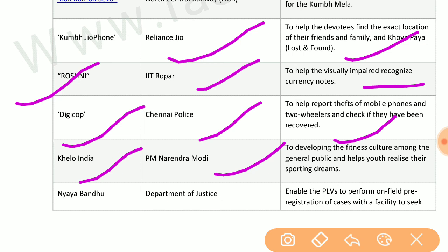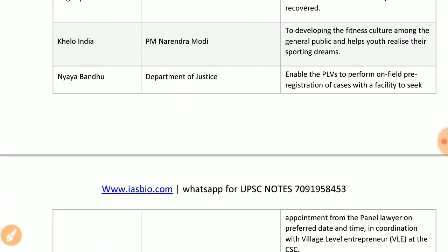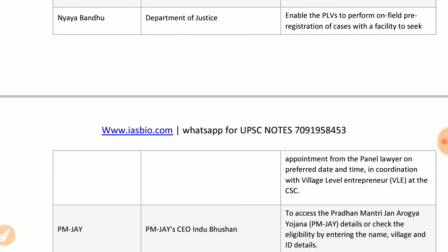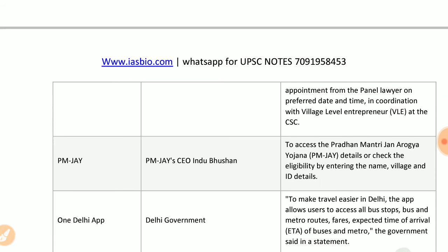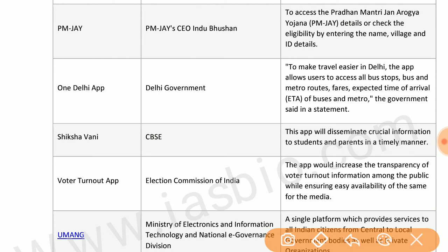DigiCop by Chennai Police helps report theft of mobile phones and two-wheelers and check if they have been recovered. Fit India by the Prime Minister develops fitness culture among the general public and helps youth realize their sporting dreams. Nyay Bandhu by the Department of Justice enables PLVs to perform pre-registration of cases with a facility to seek appointment from panel lawyers. PM-JAY app by PM-JAY CEO provides access to Pradhan Mantri Jan Arogya Yojana details and eligibility checks. One Delhi app by the Delhi government makes travel easier in Delhi.